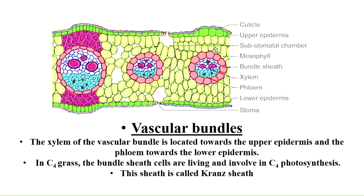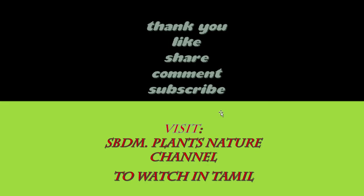This is the primary internal arrangement of the monocot leaf, which has parts including: cuticle, upper epidermis, sub-stomatal chamber — the stomata are present in both the upper and lower epidermis, and below both stomata you can find the sub-stomatal chamber, also called the respiratory cavity or air chamber — mesophyll containing uniform cells, bundle sheath, xylem, phloem, lower epidermis, and cuticle. Thank you so much for watching.